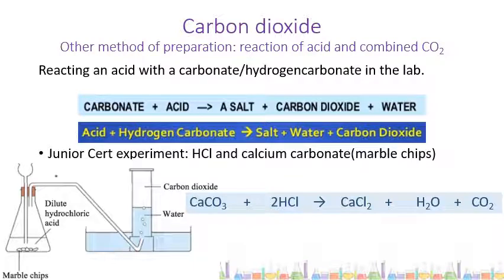Other methods of preparing carbon dioxide include reacting an acid with a carbonate or hydrogen carbonate in the lab. An acid plus a carbonate or hydrogen carbonate produces a salt, water, and carbon dioxide. At junior cert level, you would have done this by adding hydrochloric acid to calcium carbonate or marble chips and collecting the CO2 gas over water, similar to the ethene experiment. This experiment is not on the current syllabus — just linking it back to your junior cert experience.